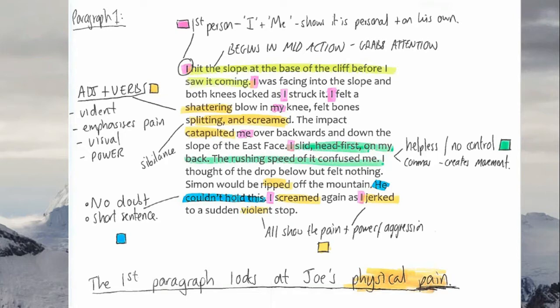Then it says: 'I felt a shattering blow in my knee, felt bones splitting and screamed. The impact catapulted me over backwards.' The yellow highlighted words — shattering, splitting, screamed, catapulted, ripped, jerked — these are adjectives and verbs. Shattering would be an adjective, splitting and screamed are verbs. But all of these connote violence, emphasise pain, are visual — we can imagine them happening. They show the power, the pain, and the aggression of the mountain. We've also got sibilance there with 'splitting' and 'screamed.' The word 'catapulted' shows it didn't just move him — it catapulted him like a slingshot over the mountain.